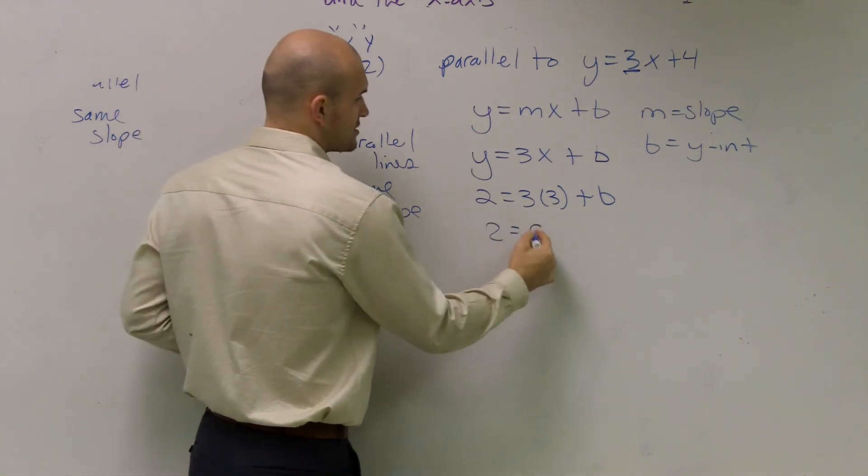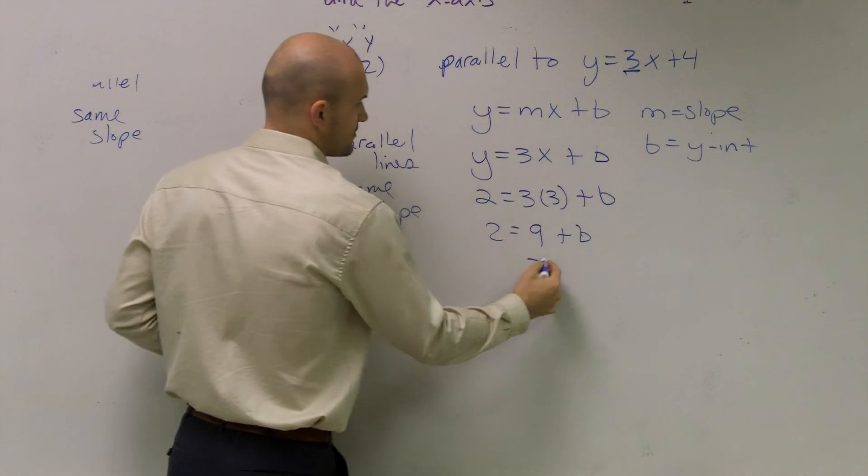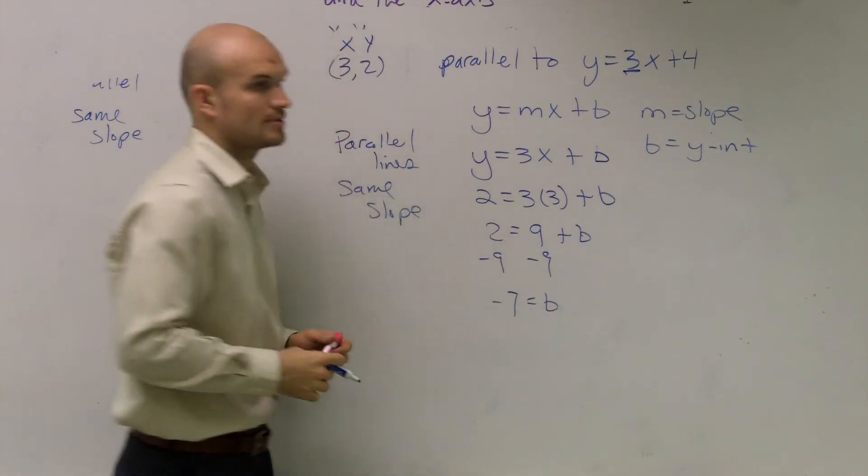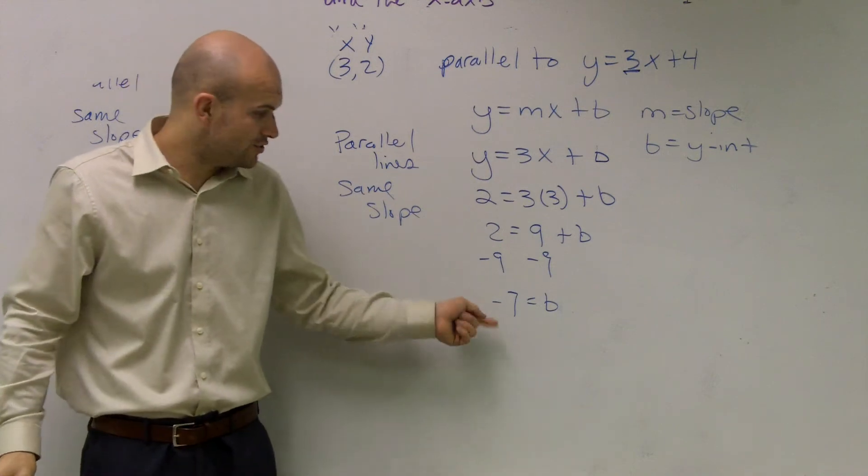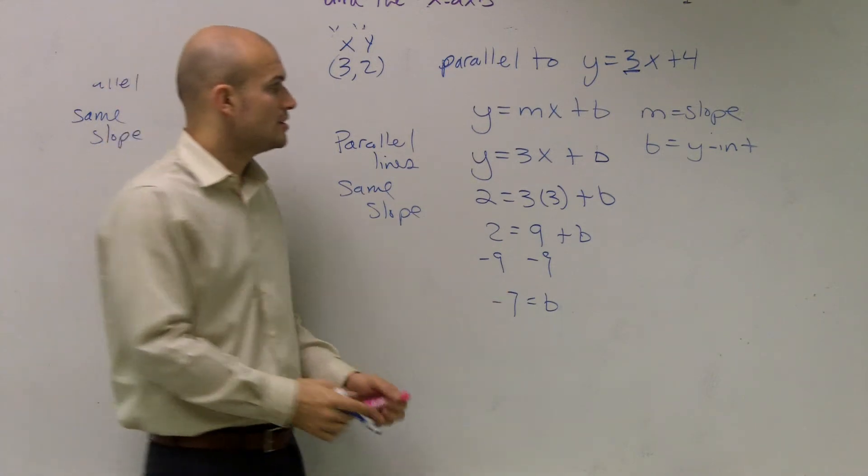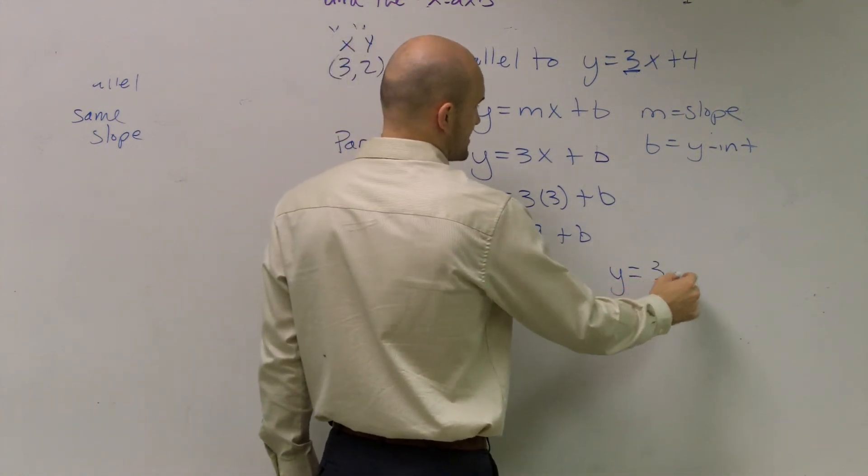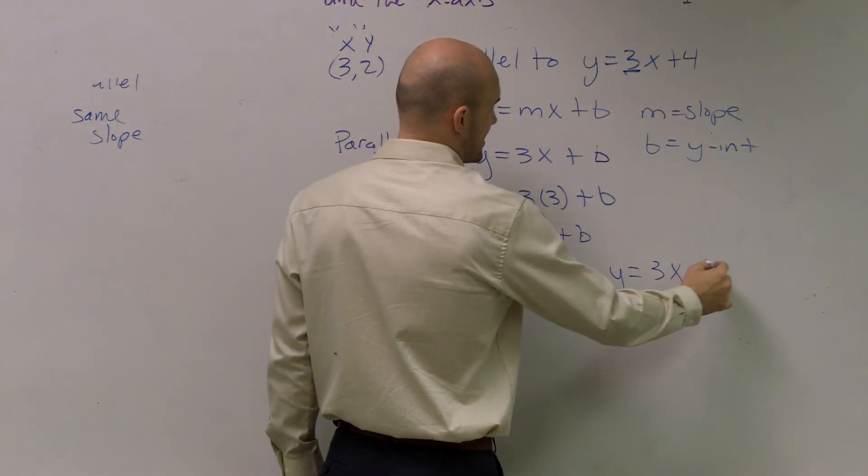So I add 2 equals 9 plus b, subtract 9, I get a negative 7 equals b. So therefore, my new y-intercept is negative 7. So you can say y equals 3x, because that's my slope, minus 7.